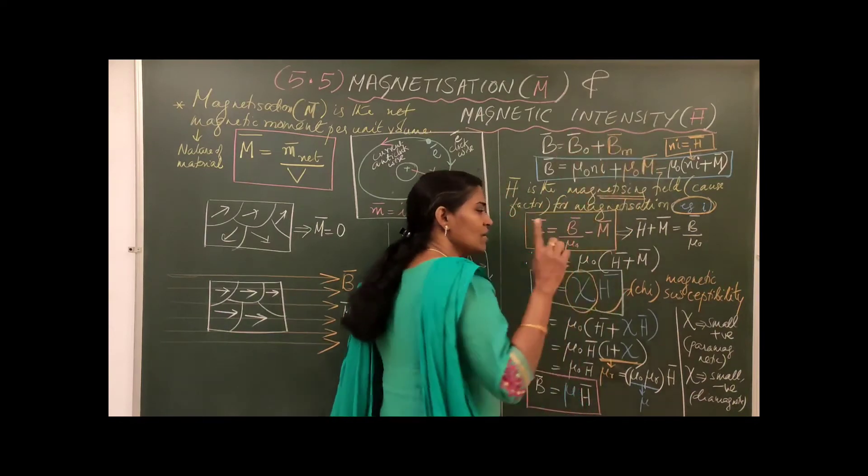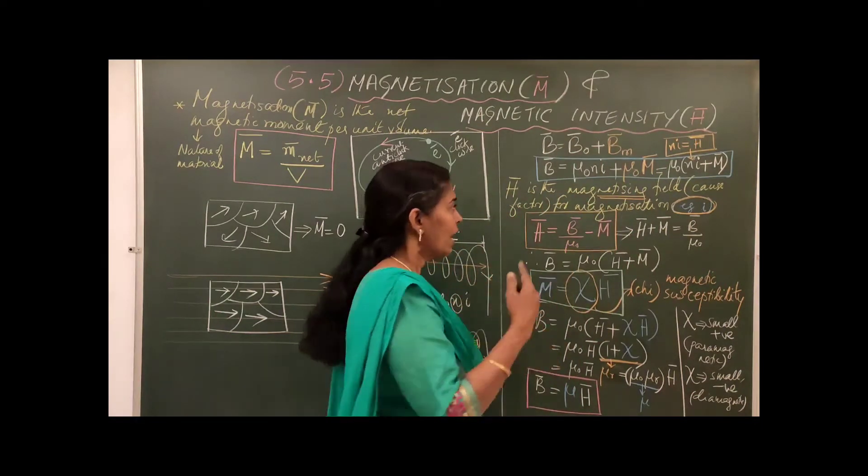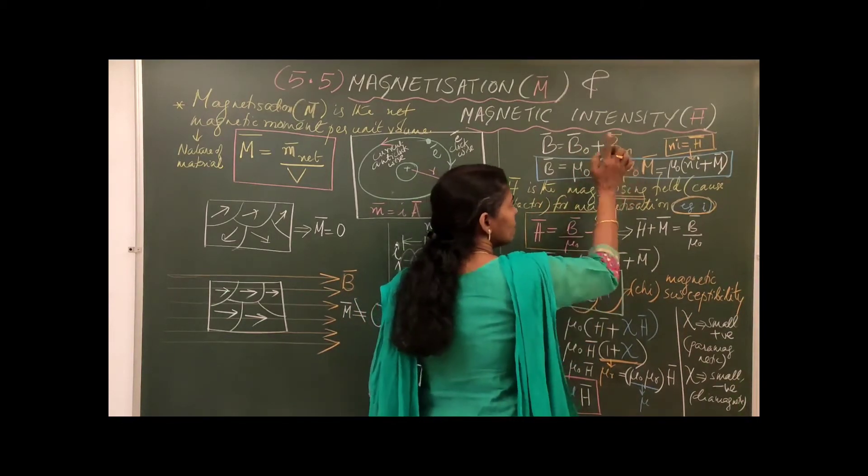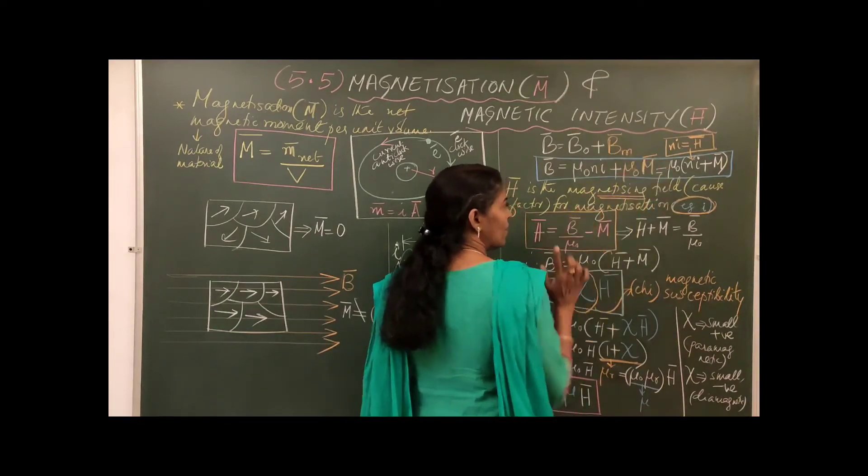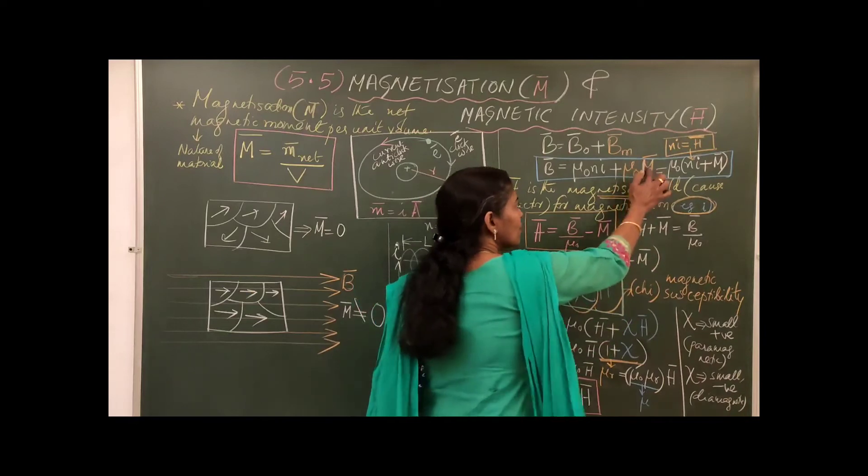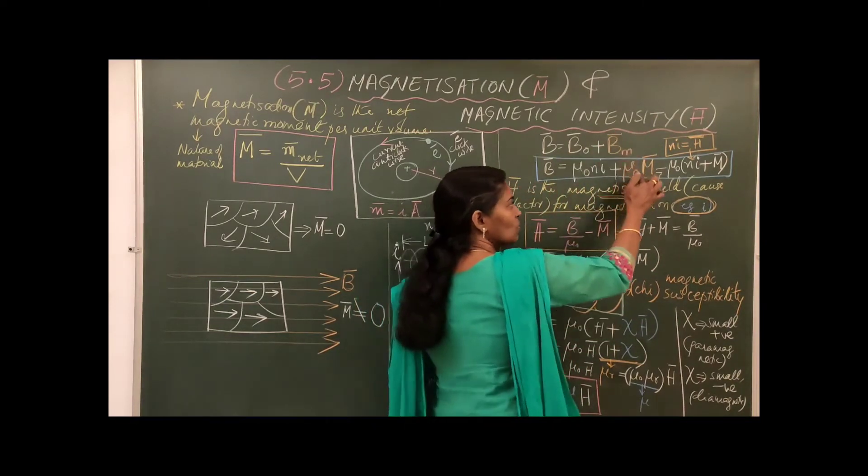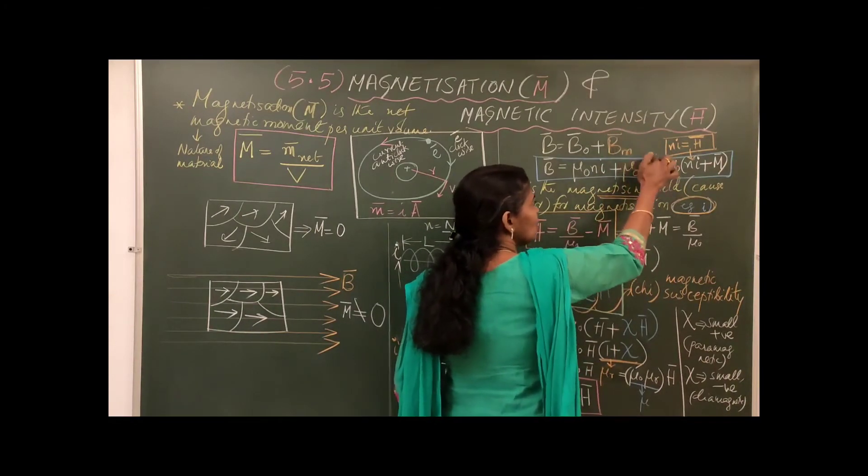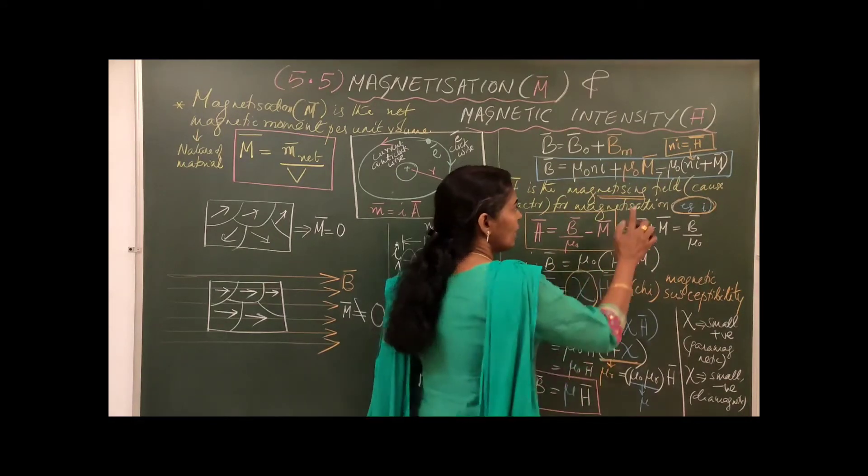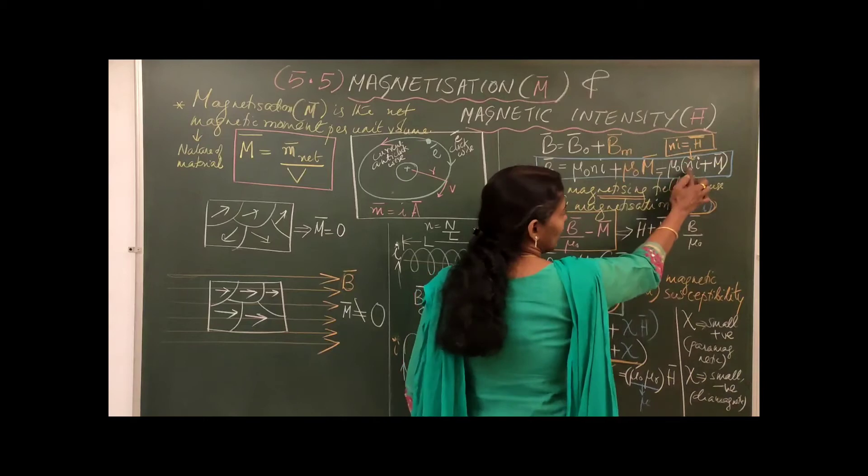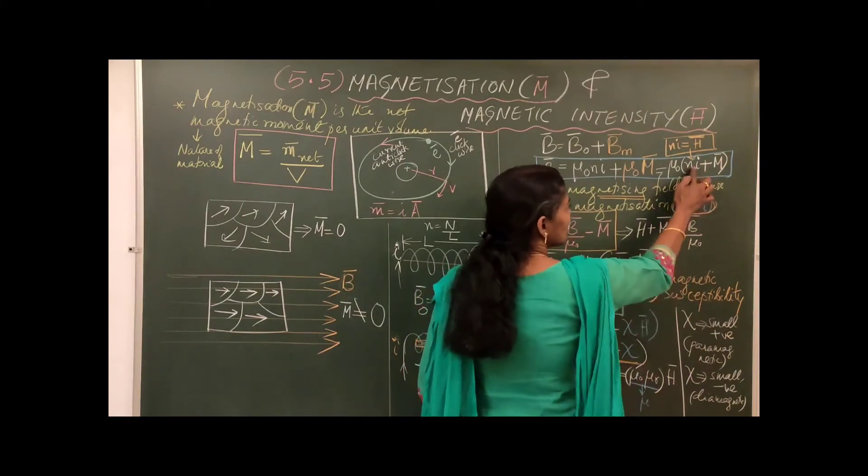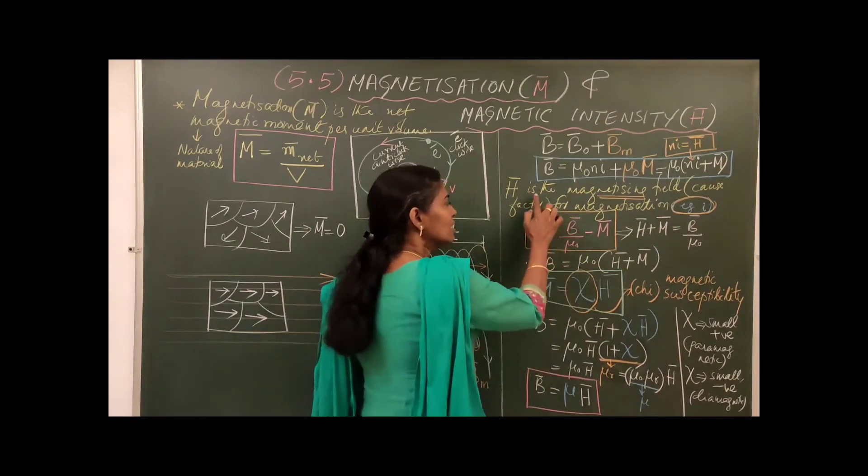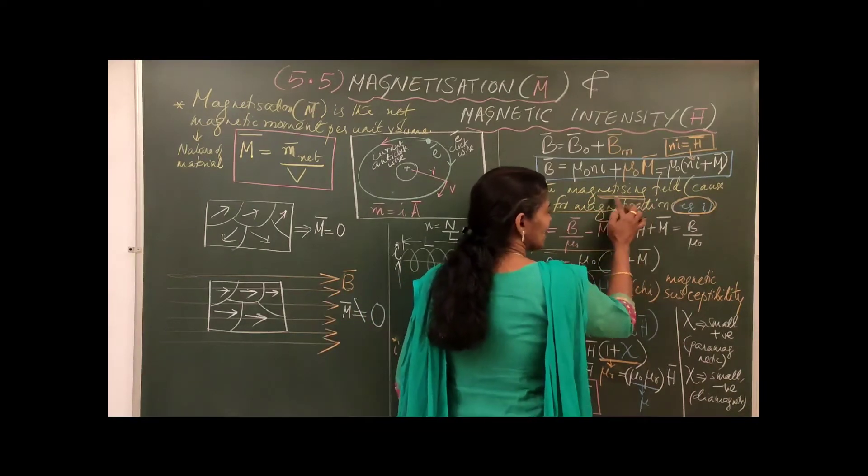Underline: the magnetization results in a new magnetic field B bar. So you can rewrite this equation as B zero you know, mu zero N I. B M is defined as mu zero M bar. So you can take mu zero outside. You will have N I plus M bar. This N I is again H bar, a new term H bar. H bar is the magnetizing field. The word is magnetizing.